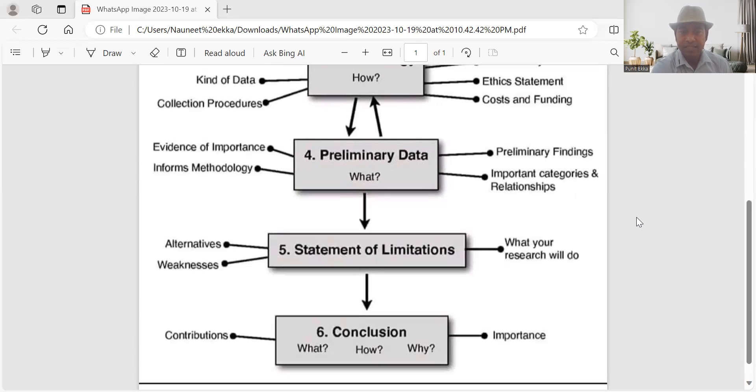The fifth is statement of limitations. Once the topic is identified, the scope is limited. Anything which is beyond that scope is not part of that particular research. Statement of limitations is also important. Let's say in terms of methodology, particular methodology is used. There are other methodologies which could have been used. Those come under limitations.